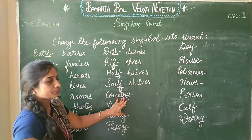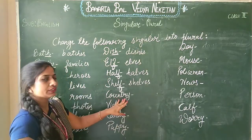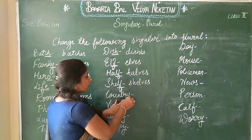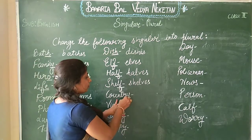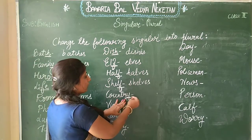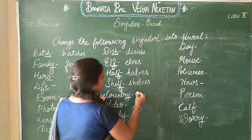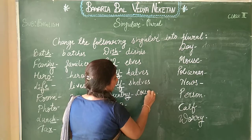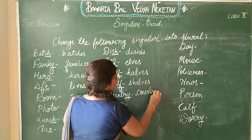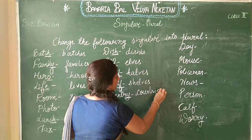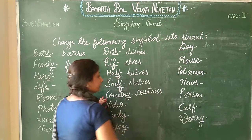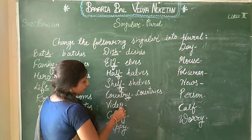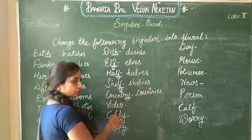Then 'country'. In the word 'country', at the end there is Y. So we will replace Y with IES — C-O-U-N-T-R-I-E-S, 'countries'.